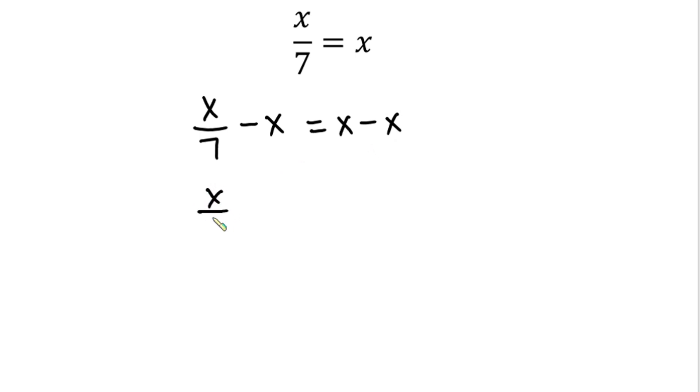So that we get x over 7 minus x is equal to zero.